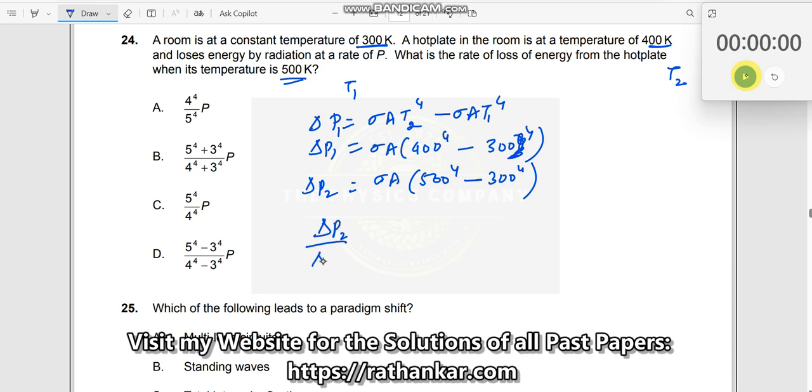So delta P2 divided by delta P1 is equal to 500 to the power of 4 minus 300 to the power of 4, divided by 400 to the power of 4 minus 300 to the power of 4.